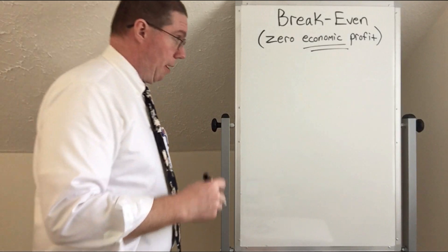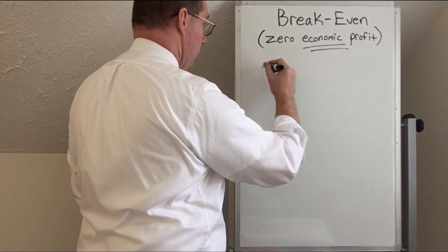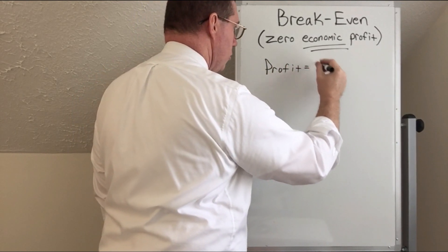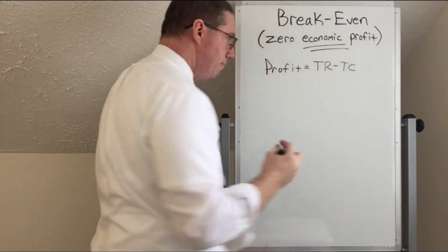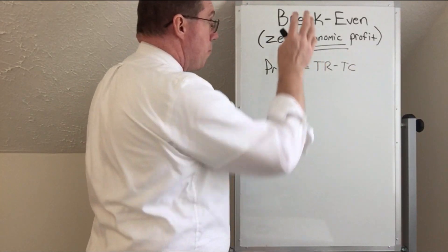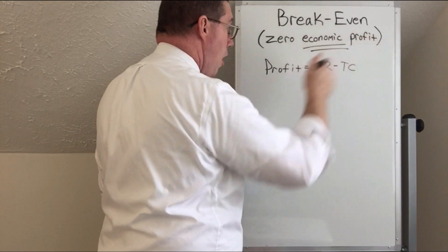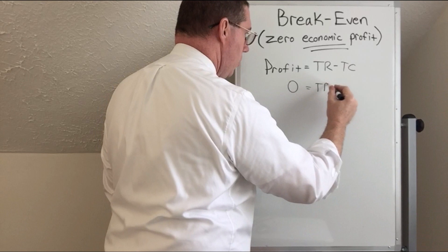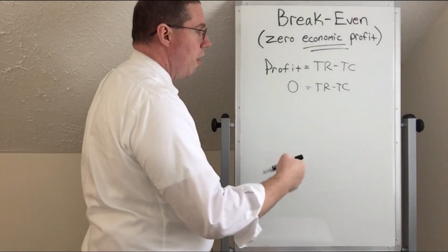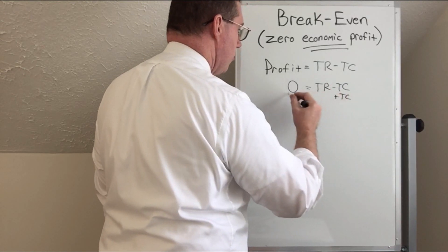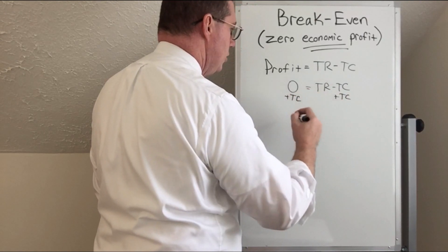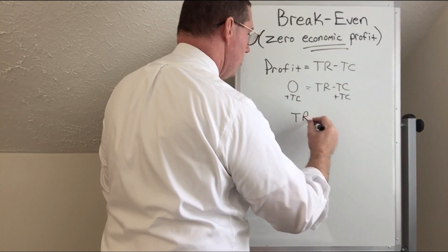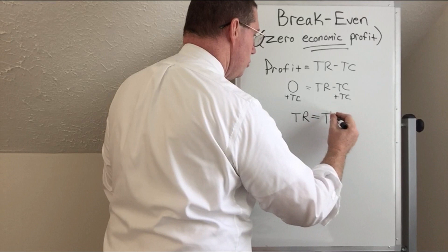I want to go all the way back to when we learned about break-even analysis. We started with the profit equation and said that profit is equal to total revenue minus total cost. Breaking even, or zero profit, means that profit is zero, and in order for profit to be zero — total revenue minus total cost — we can solve this algebraically: zero economic profit occurs when total revenue is equal to total cost.